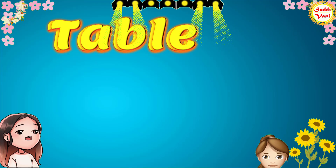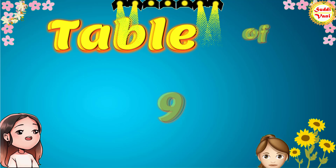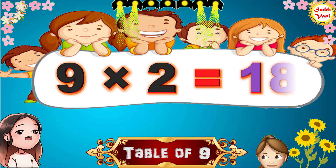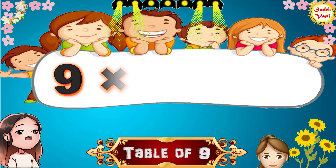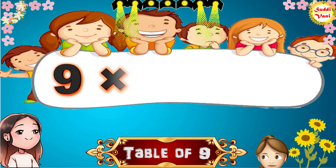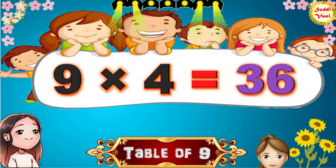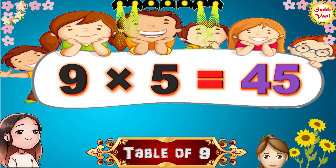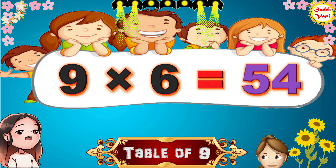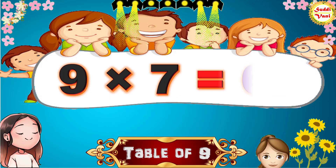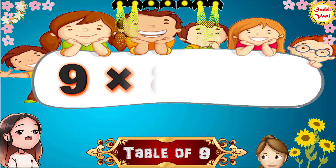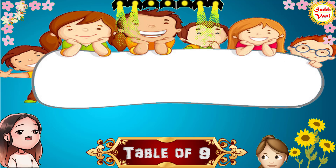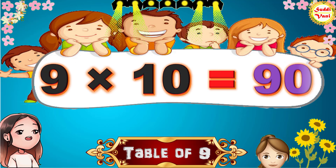Hello children, we will learn table of 9. 9 1's are 9, 9 2's are 18, 9 3's are 27, 9 4's are 36, 9 5's are 45, 9 6's are 54, 9 7's are 63, 9 8's are 72, 9 9's are 81, 9 10's are 90.